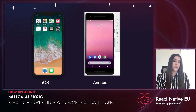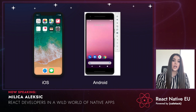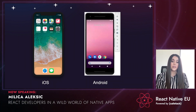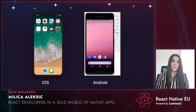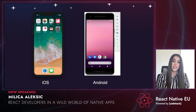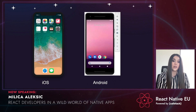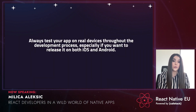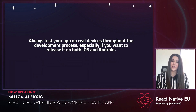Simulators are good for testing and building, but we've had cases where a feature worked fine on the simulator or emulator and then failed on a real device — because simulation can never replicate 100% of the hardware. My advice is to always test your application on real devices throughout the development process, especially if you want to release on both iOS and Android.